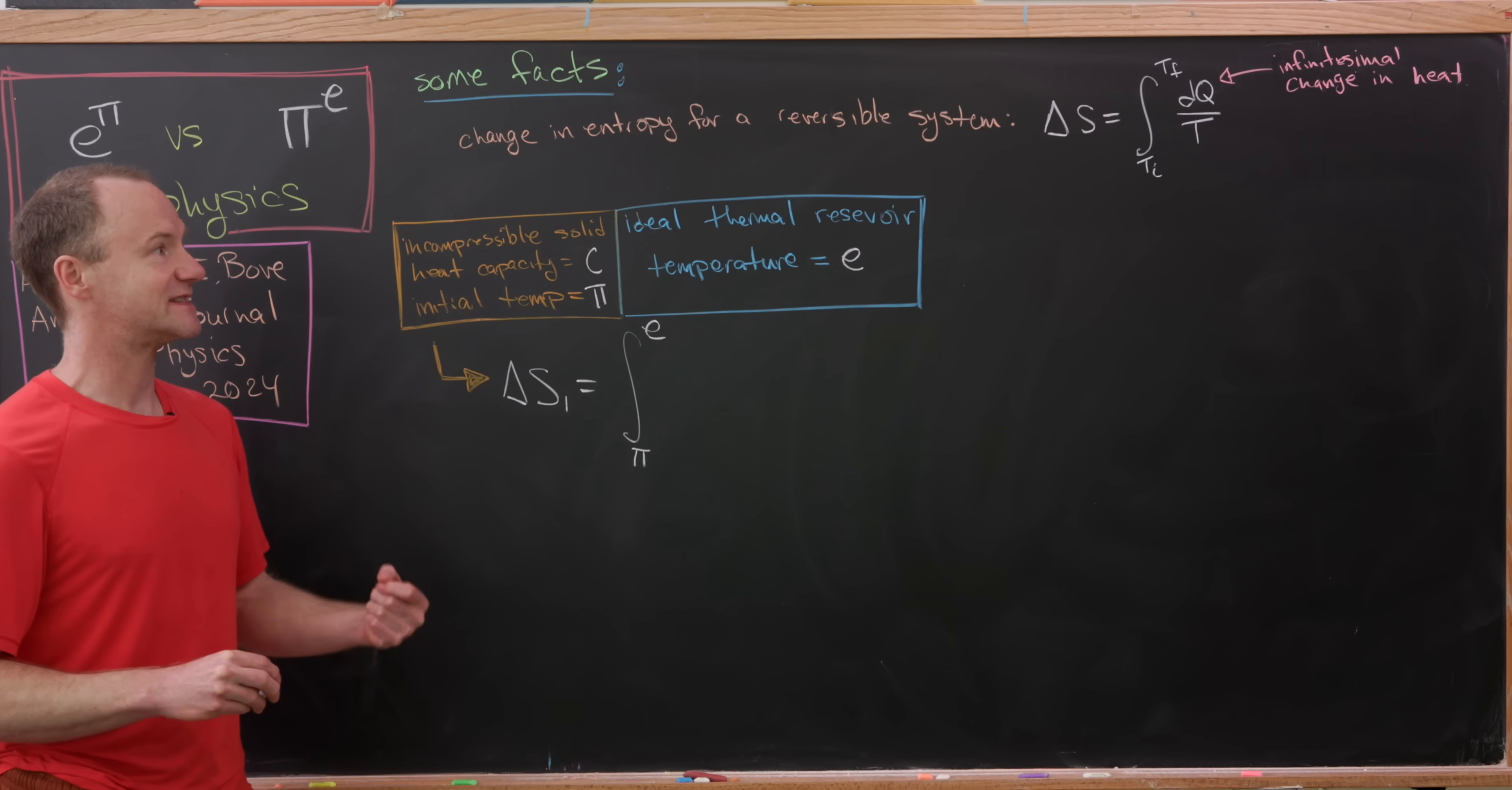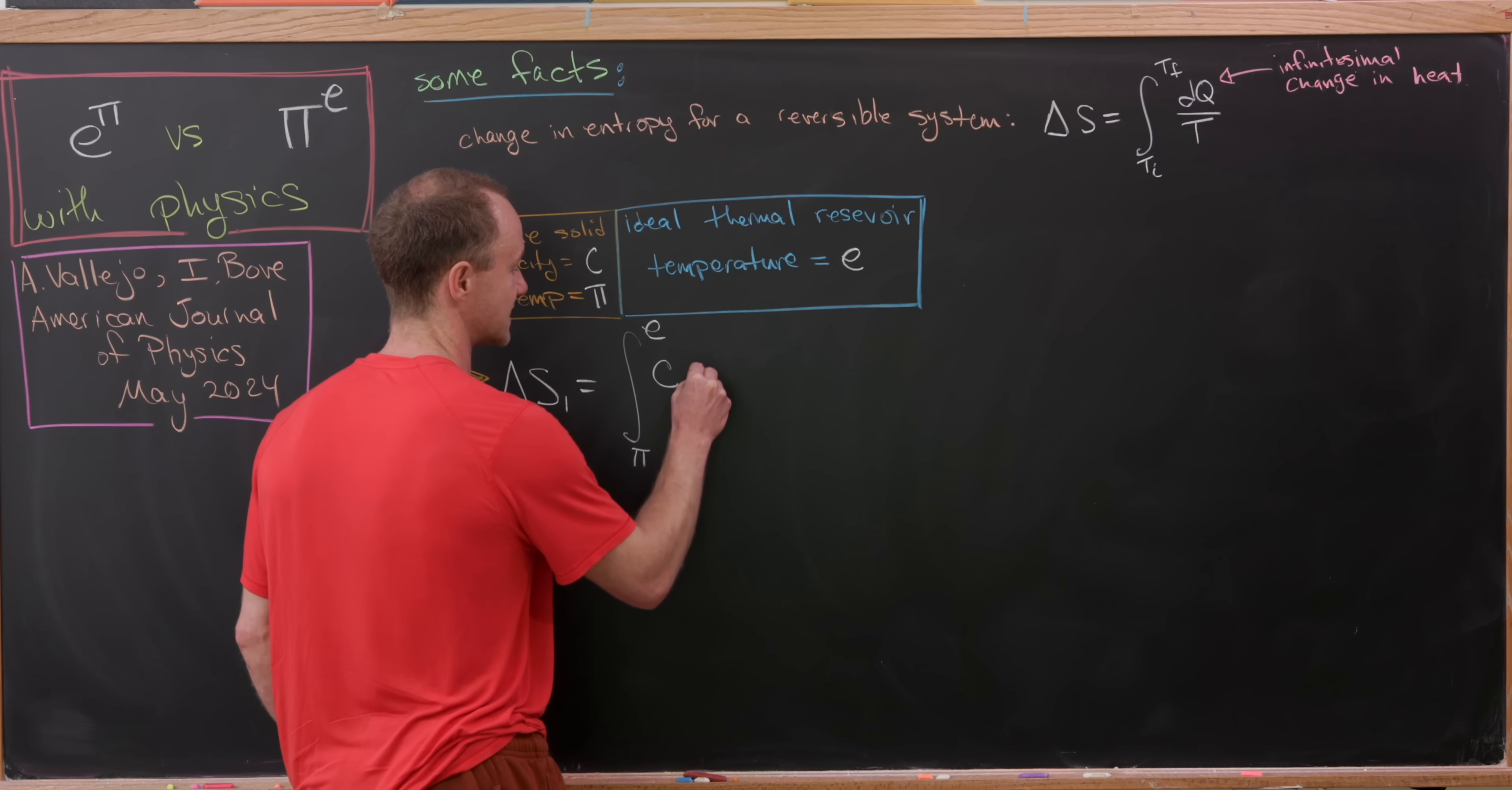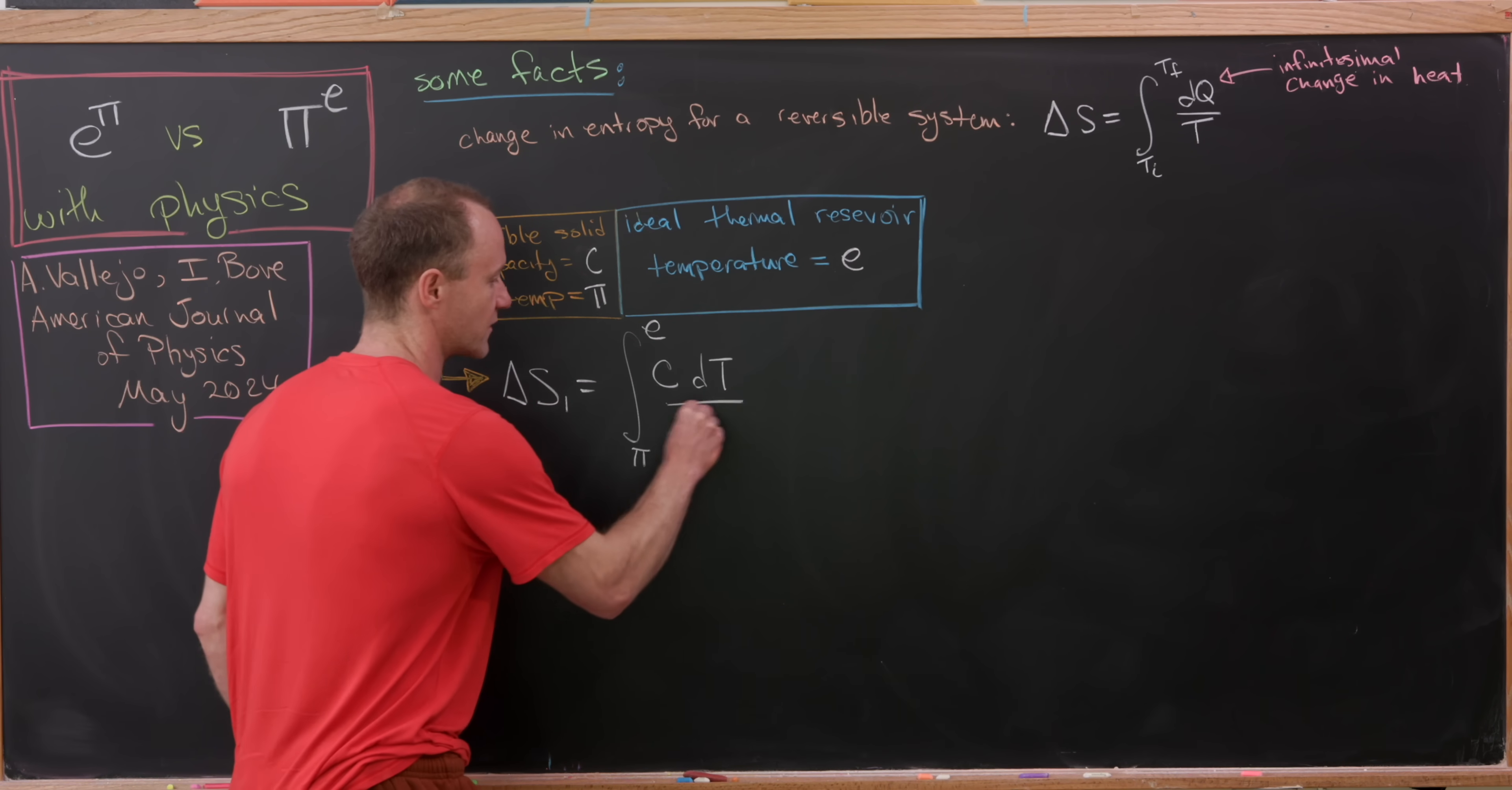of this dQ, this infinitesimal change in heat. But given the setup that we have here, this dQ is given by the heat capacity times the infinitesimal change in temperature. Okay, so we've got C dT over T.